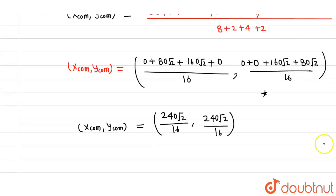Now further, as we know that 240 by 16 can be written as 120 by 8, or 60 by 4, or 30 by 2, or in short, 15. So the coordinates are 15√2, 15√2. These are the x and y coordinates of center of mass.